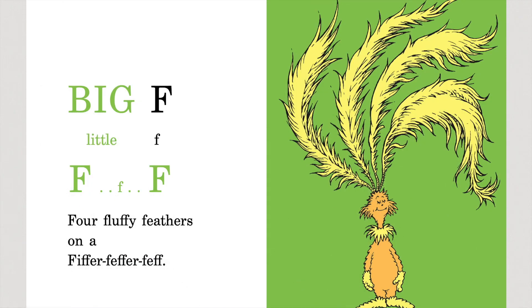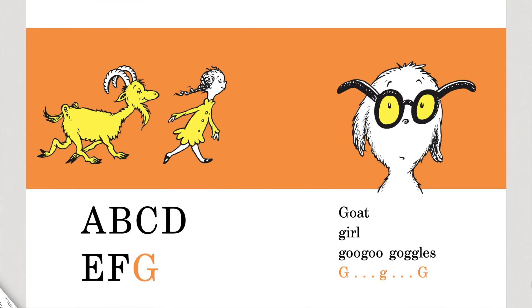Big F, little F — F, F, F, F. Four fluffy feathers on a fiffer-feffer-feff. A, B, C, D, E, F, G. Goat girl, goo goo goggles, G, G, G.